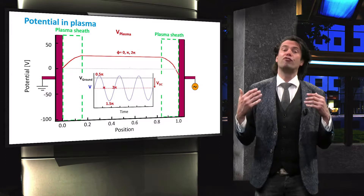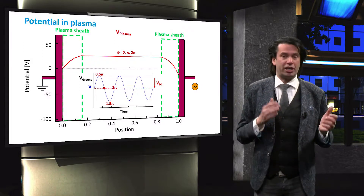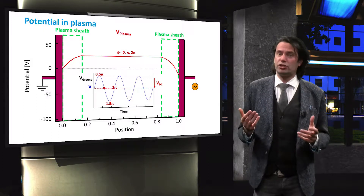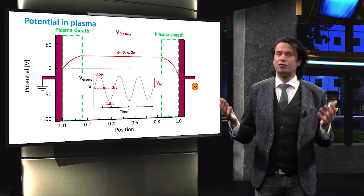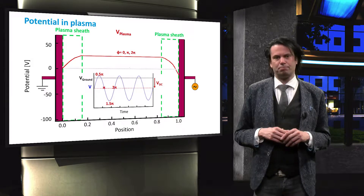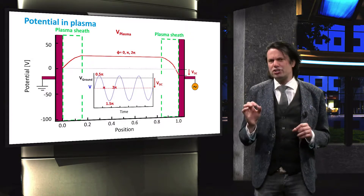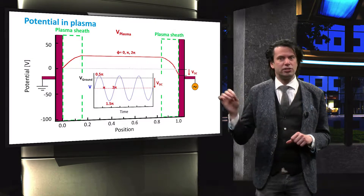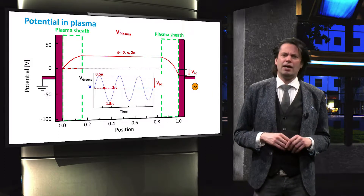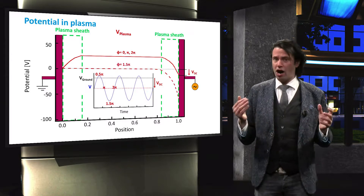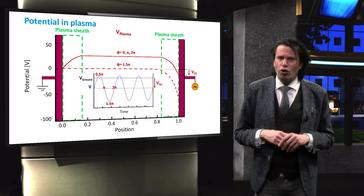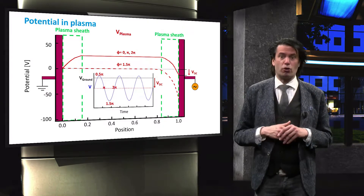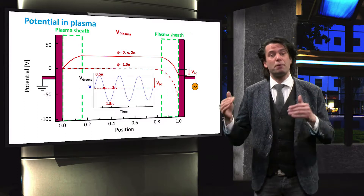The potential increases over the sheath region to the plasma potential. The plasma has a positive potential with respect to the electrode because of the electron drain from the plasma. The potential at the powered electrode is equal to that of the grounded electrode minus the DC offset. At a phase shift of 1.5 pi, the potential at the powered electrode reaches a minimum and a large voltage drop occurs over the sheath region at the powered electrode.